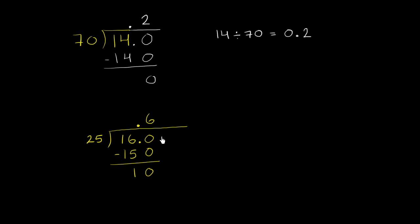And now we just bring down one more 0. We add one more place value. Notice we're not changing the value. 16 is the same thing as 16.0, just the same thing as 16.00. So now you bring down this 0 right over here. And how many times does 25 go into 100? Well, we know it goes exactly 4 times. 4 times 25 is 100.